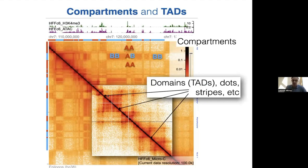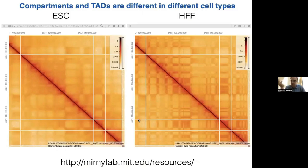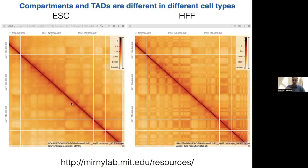There are also dots and stripes. These two types of patterns coexist; they mechanistically come from different processes and may have different functional roles. They can be very different between cell types. You can browse Hi-C data yourself at higlass.io or our lab website, where for all major papers we put Hi-C maps that people can browse as Google Maps, because otherwise there's a huge barrier to download and load data into a browser.